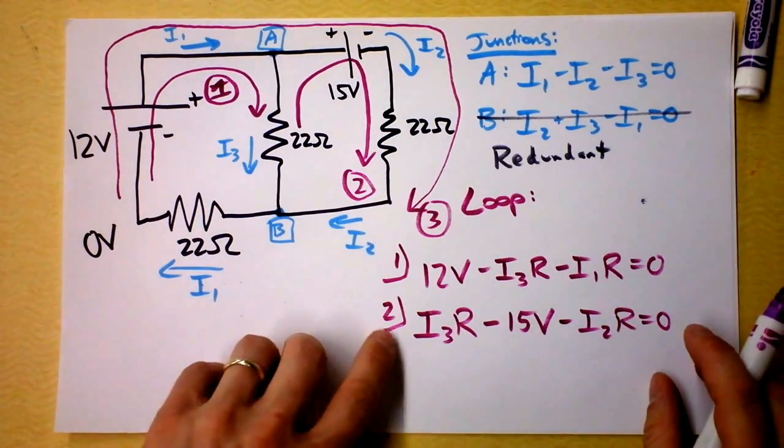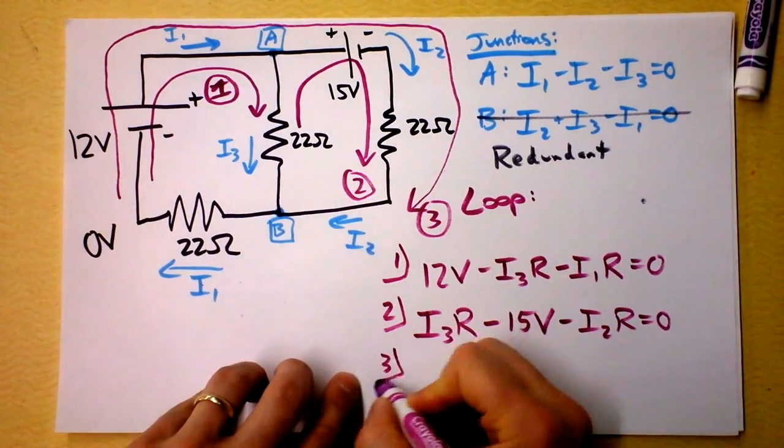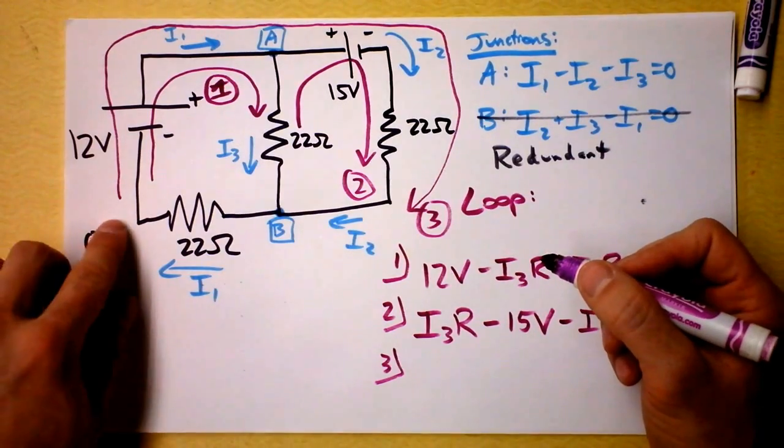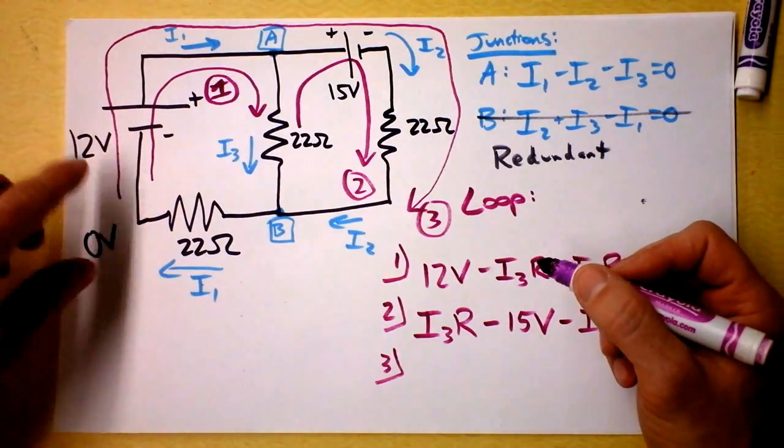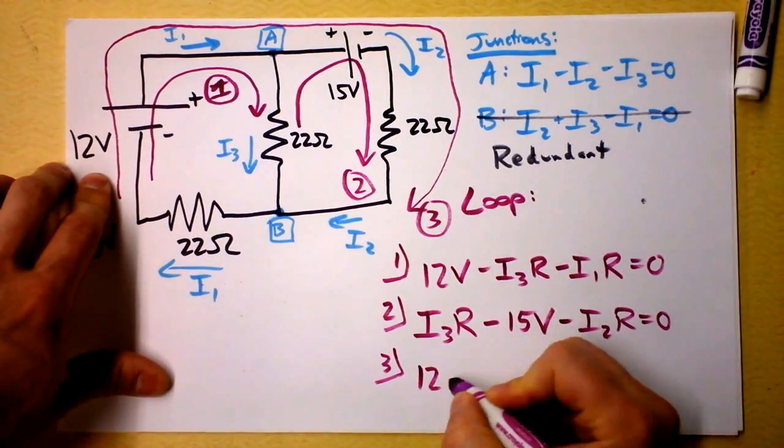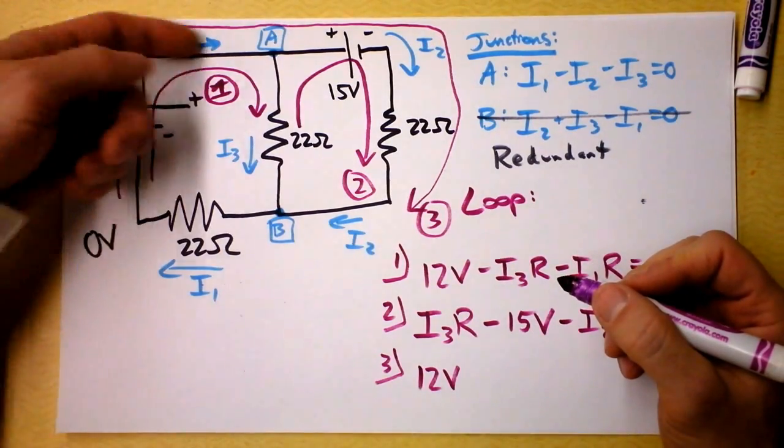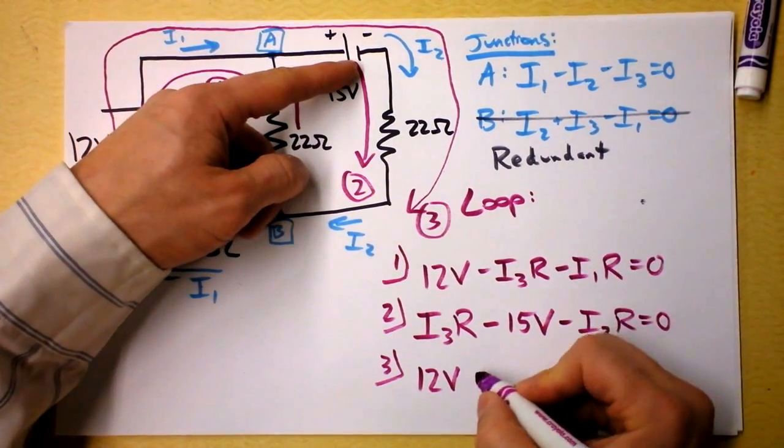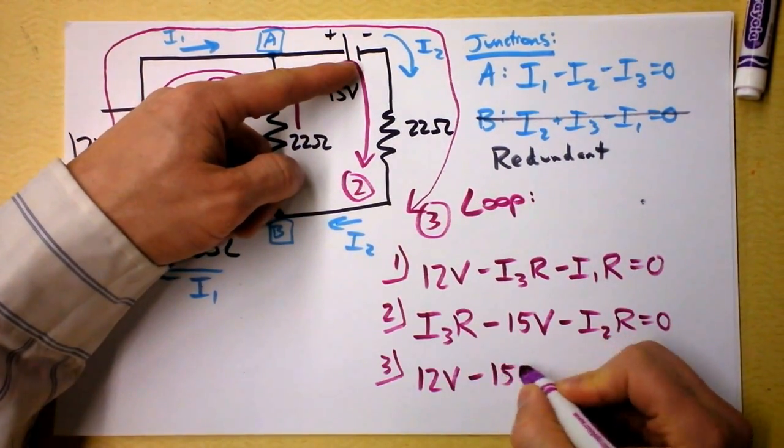And then I'm going to get loop 3 going right here. Loop 3 starts here and goes all the way around the outside of the circuit. I get 12 volts. And then I'm going through this battery the wrong direction. So I subtract 15 volts.